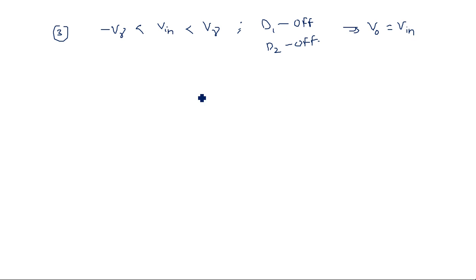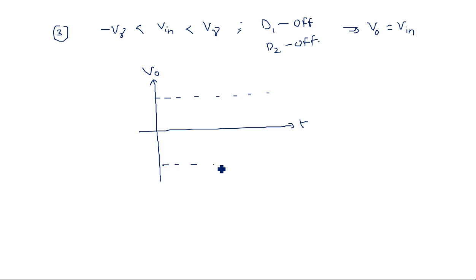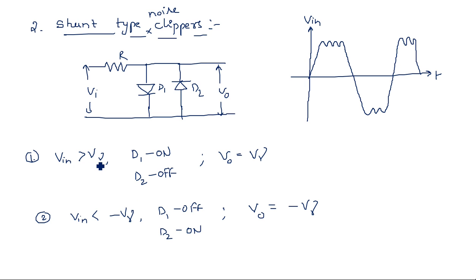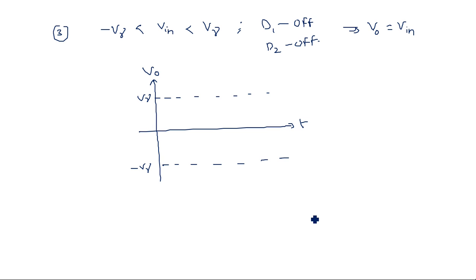This is exactly opposite to the series type clipper. With these conditions, drawing the output waveform: when input voltage is greater than positive V-gamma, output is clipped to V-gamma; when input is less than minus V-gamma, output is clipped to minus V-gamma; and during the remaining period output exactly equals input. So the output waveform has the peak noise clipped at plus and minus V-gamma, with some clipping at the ends rather than sharp curved shapes.